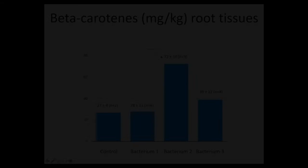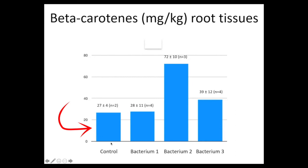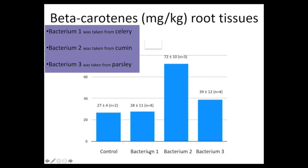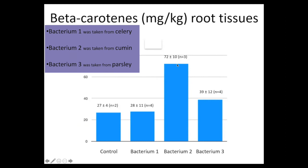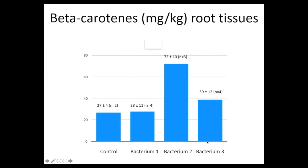The HPLC analysis showed the control — carrots without added bacteria — had a small baseline level of carotenes. Bacterium one appeared to have no effect and probably didn't even colonize; it wasn't compatible with carrot. Bacterium two showed a major increase in beta-carotene — at least double, maybe two and a half times. Bacterium three increased it slightly, so it colonized but didn't provide the same benefit.